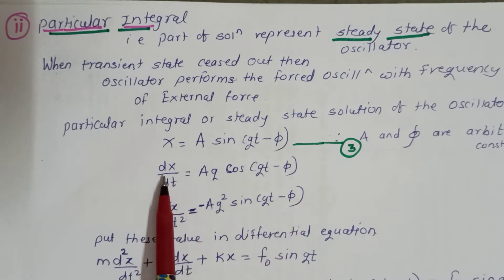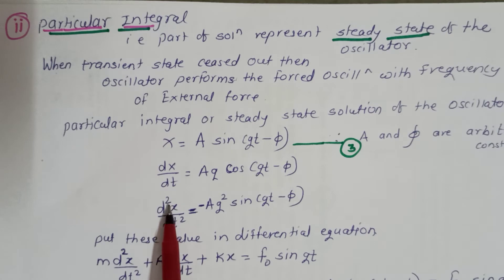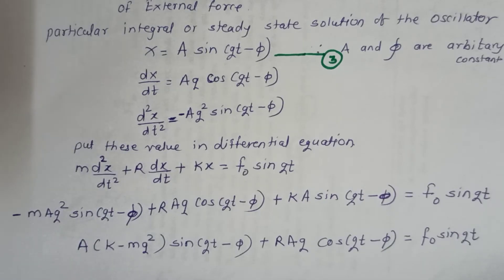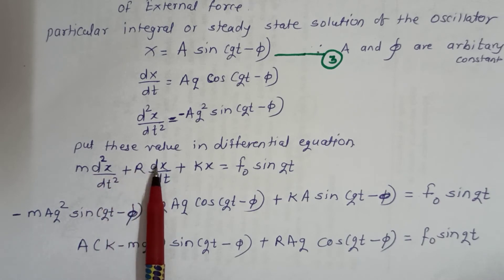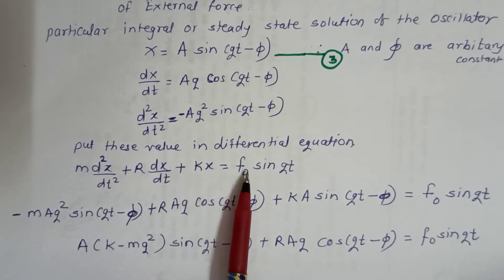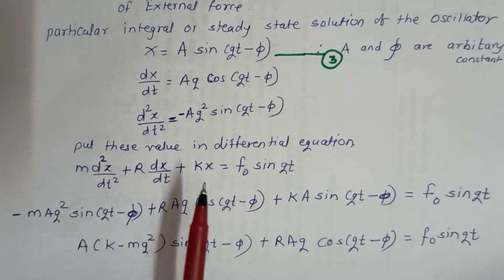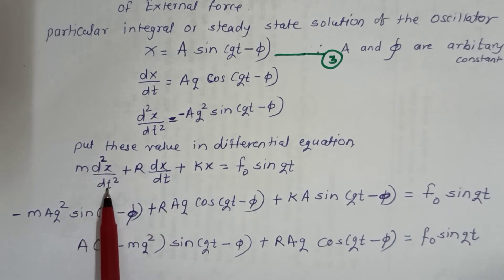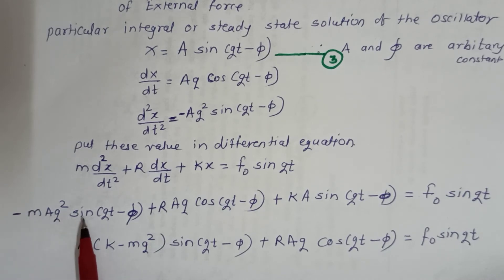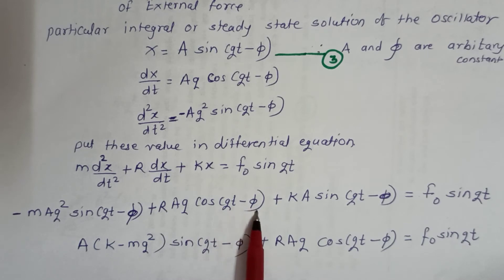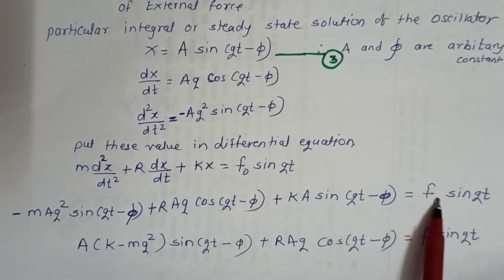Now, substituting the values of x, dx/dt, and d²x/dt² into the differential equation M·(d²x/dt²) + R·(dx/dt) + Kx = F₀·sin(Qt), we get: −MA·Q²·sin(Qt − φ) + R·A·Q·cos(Qt − φ) + K·A·sin(Qt − φ) = F₀·sin(Qt).